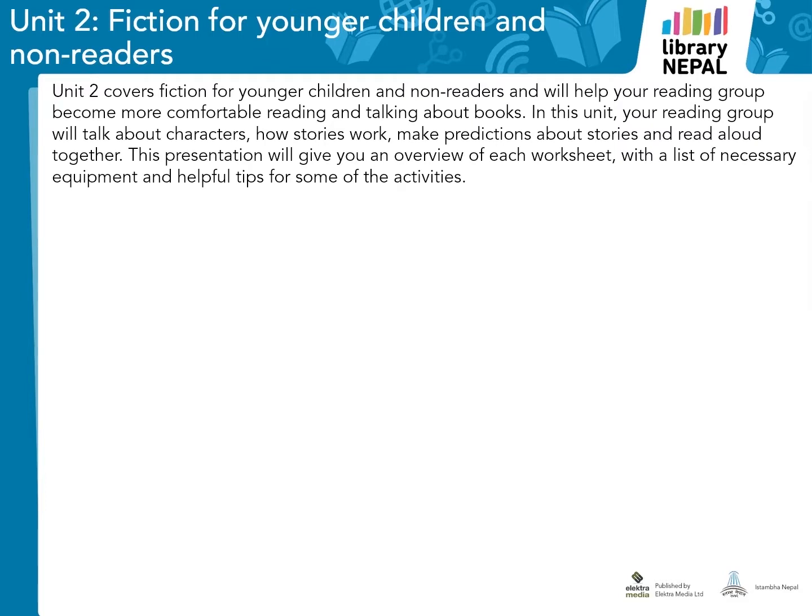Unit 2 covers fiction for younger children and non-readers and will help your reading group become more comfortable reading and talking about books and stories. In this unit, your reading group will talk about characters, discuss how stories work, make predictions about stories and read aloud together. The activities have been designed so that they can be adapted for use with learners of all ages and abilities, and suggestions have been given for how to do this. If an activity does not seem suitable for your group, just miss it out and go to the next one, or think about how you could do it differently. This presentation will give you an overview of each worksheet, with a list of necessary equipment and helpful tips for some activities.